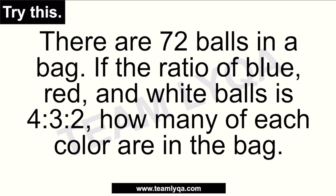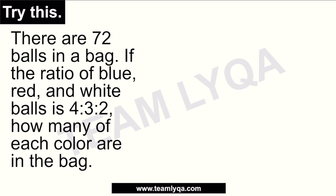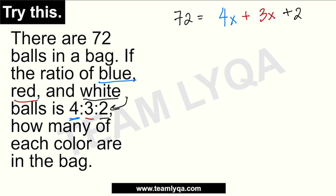Basically, yung ginawa natin kanina — naglagay tayo ng x, tapos in-add natin sila — yun din yung gagawin natin. So: 72 is equal to 4x (blue balls) plus 3x (red balls) plus 2x (white balls). Isosolve natin: 72 is equal to 4x plus 3x plus 2x, which gives us 9x, following the rule of combining like terms in algebra.